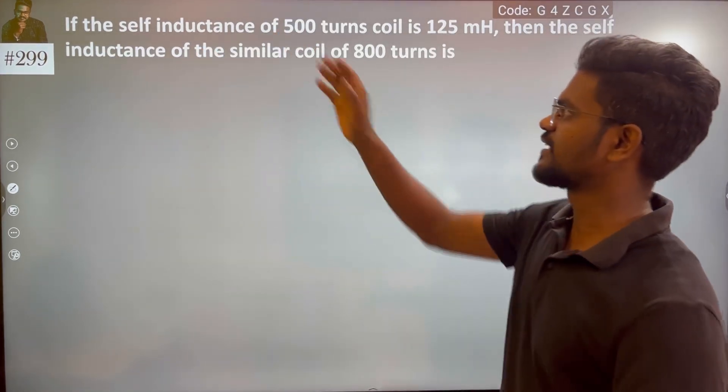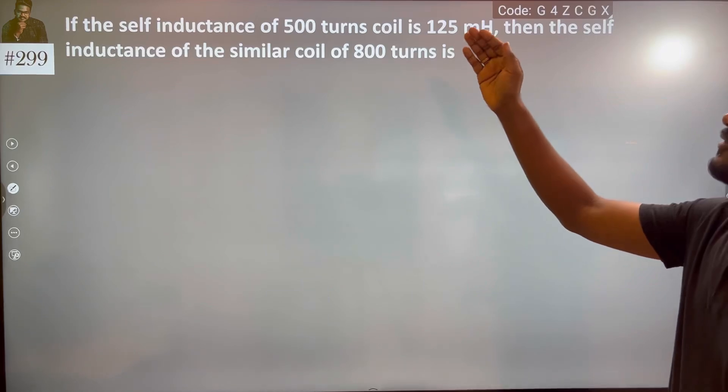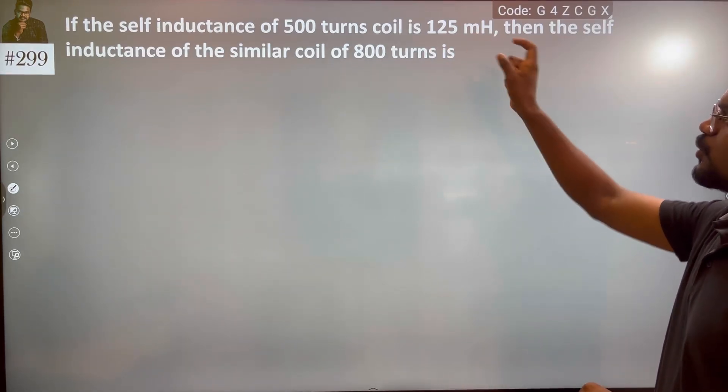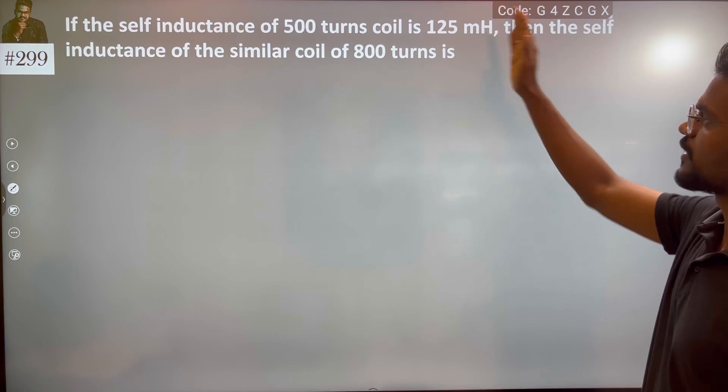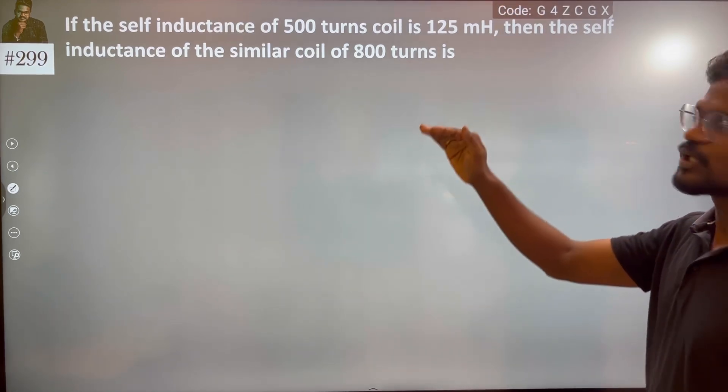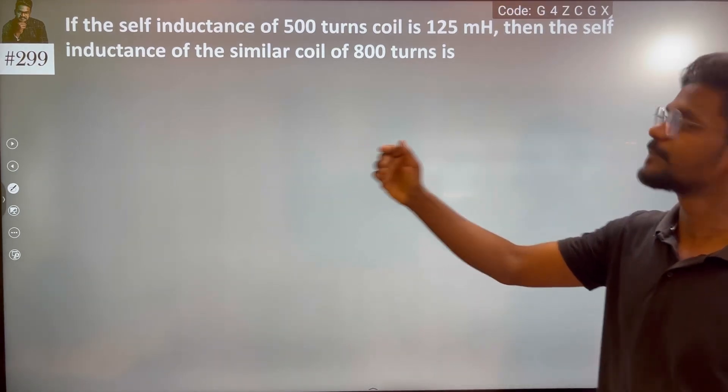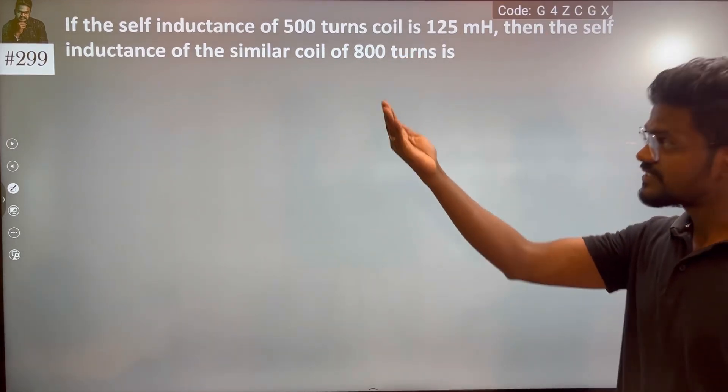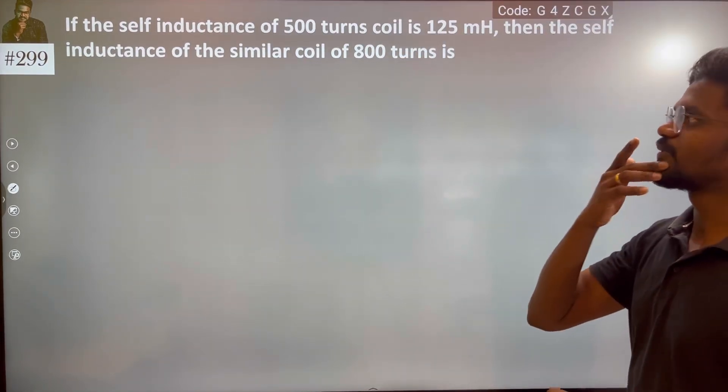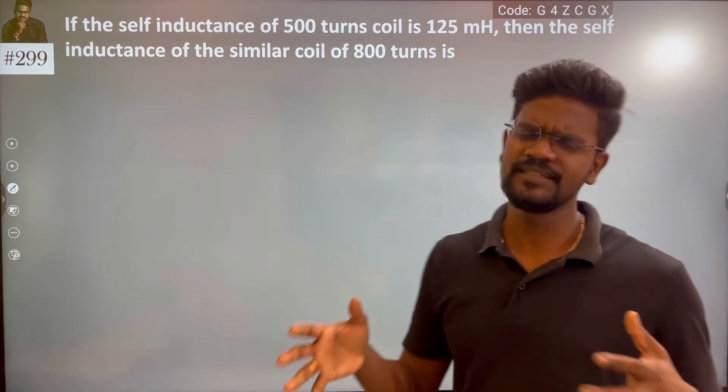If the self inductance of a 500 turns coil is 125 millihenry, then the self inductance of the similar coil with 800 turns. So there are 2 cases.